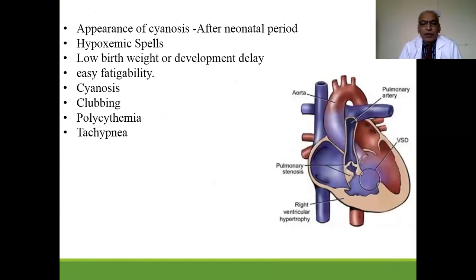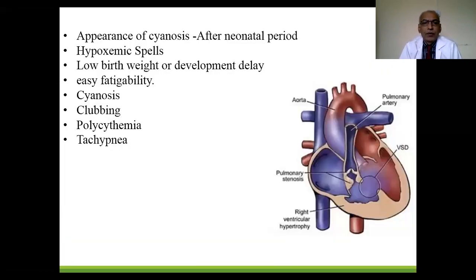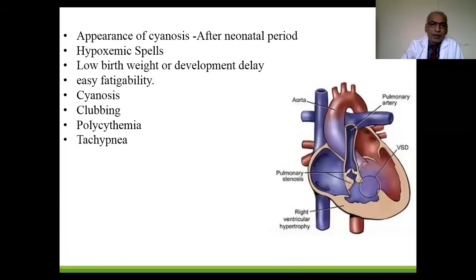Clinical features: cyanosis appears after one year of age. The child has hypoxic spells, low birth weight or developmental delay, easy fatigability, cyanosis, clubbing, respiratory difficulty with tachypnea, and polycythemia.